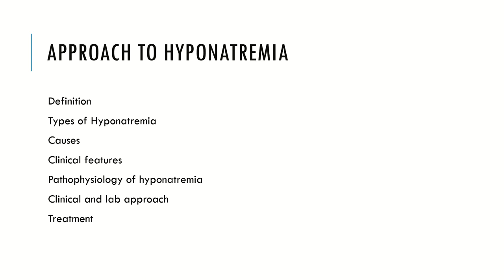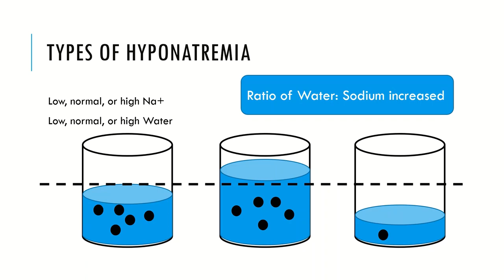When a question on hyponatremia is asked, start with a definition, go to the types, causes, clinical presentation, pathophysiology of cause and consequence, clinical and lab approach, and treatment. Definition: any sodium concentration less than 135 milliequivalents per liter is hyponatremia. The ratio of water to sodium is increased — but sodium can be low, normal, or high, and water can be low, normal, or high in various combinations. The only thing that matters is that the ratio of water to sodium is increased.